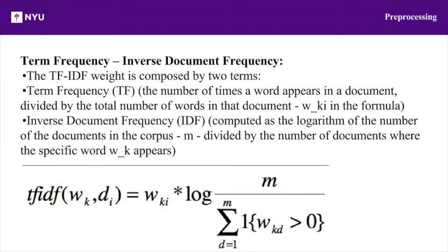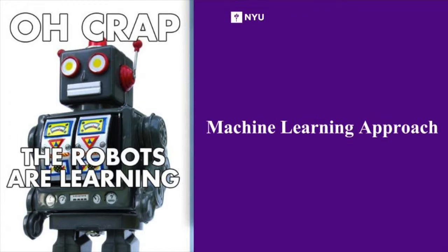Next, we use term frequency inverse document frequency, or TF-IDF for short. TF-IDF is a ratio between how many times a word is used in a document versus the number of documents where the word is used. Using TF-IDF allows you to take the document size into account and truly determine how important a word is to that synopsis, or whether it is just a common word used in every synopsis.